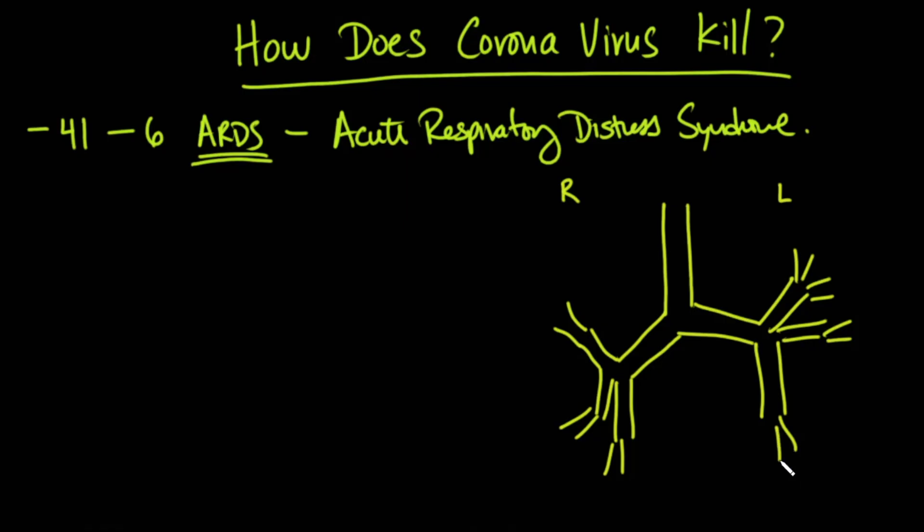And instead of leaves at the end of all of these things, what you have is something called an alveoli, which is a tiny little small grape-like structure that the air gets into, and the air of course has oxygen. So what does this look like on a large scale? Here's what an alveolus looks like.